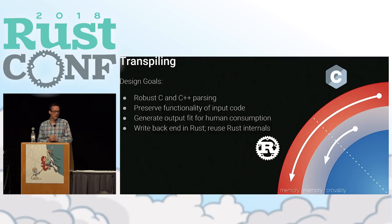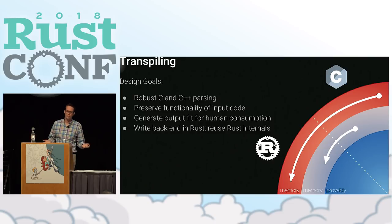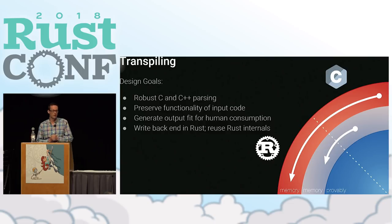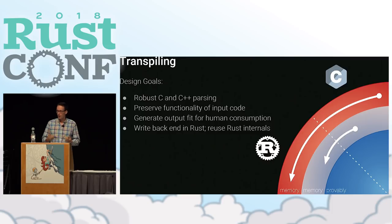We also want to, to the extent possible, generate output that's fit for human consumption, because somebody's going to be hopefully refactoring it later. And we're also excited about Rust, so we want to write as much of the transpiler in Rust as possible and reuse some of the Rust compiler internals on the back end.